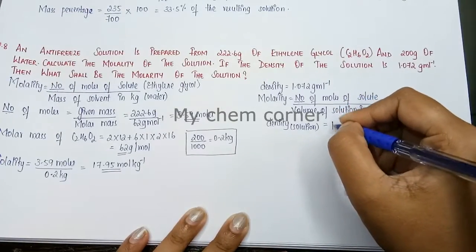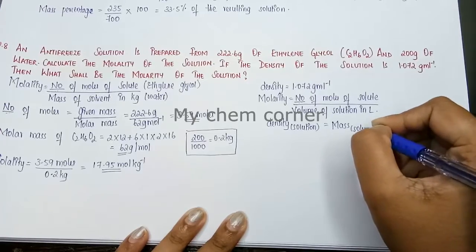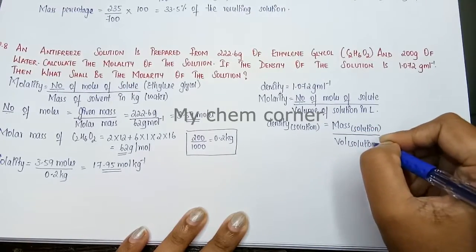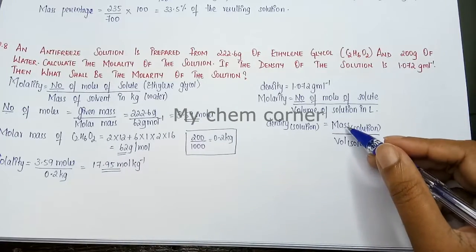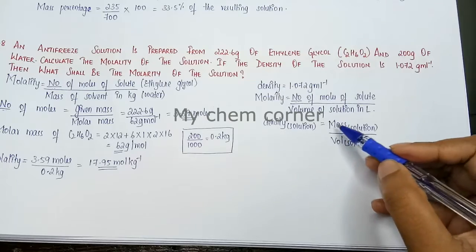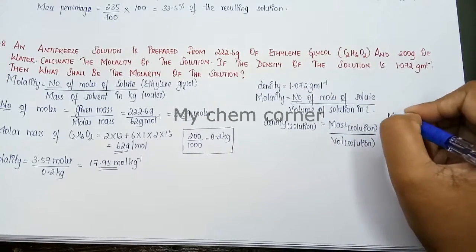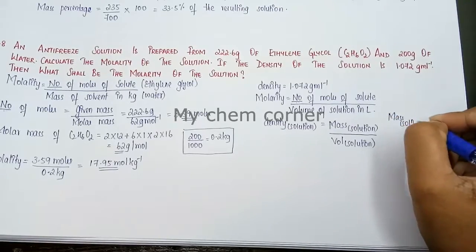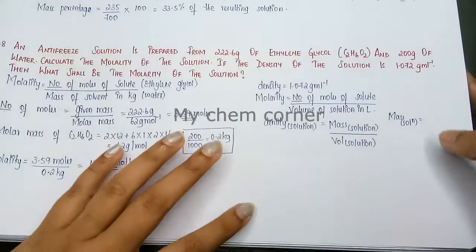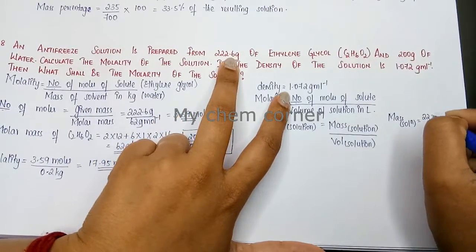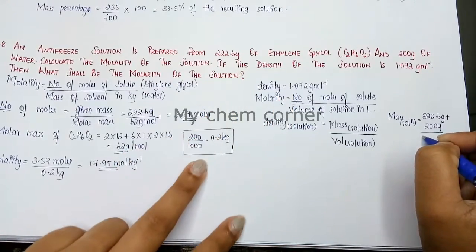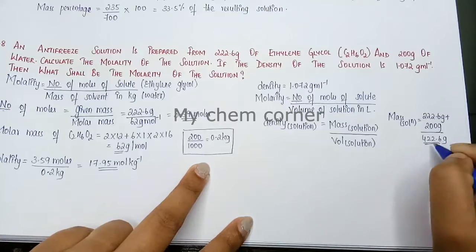We know the density, so we need the mass of the solution to find volume. Mass of solution equals mass of solute plus mass of solvent: 222.6 grams plus 200 grams equals 422.6 grams. That is our total mass of solution.